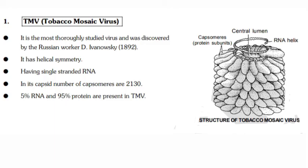Important viruses — TMV (Tobacco Mosaic Virus): the most thoroughly studied virus, discovered by Russian worker D. Ivanovsky in 1892. TMV shows helical symmetry and has single-stranded RNA. Its capsid contains 2130 capsomeres. TMV is composed of 5% RNA and 95% protein.